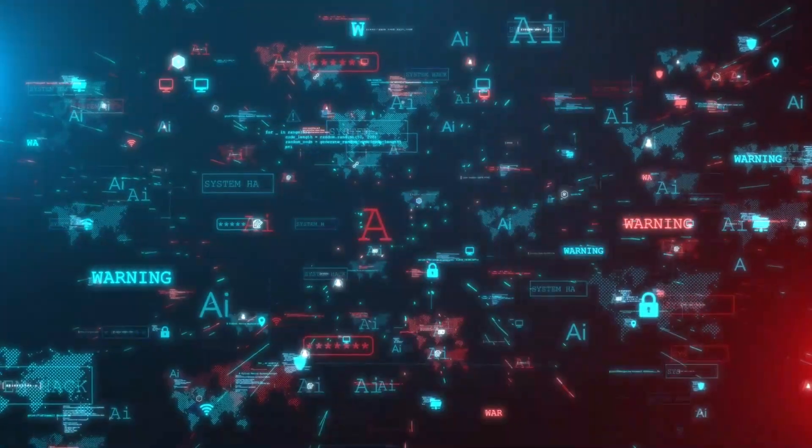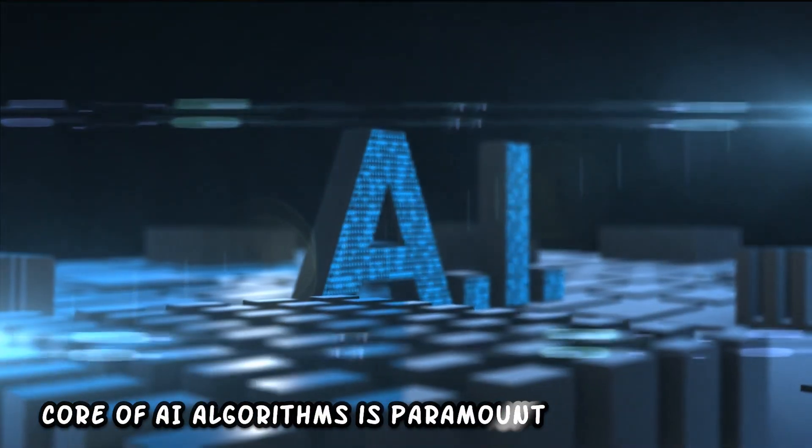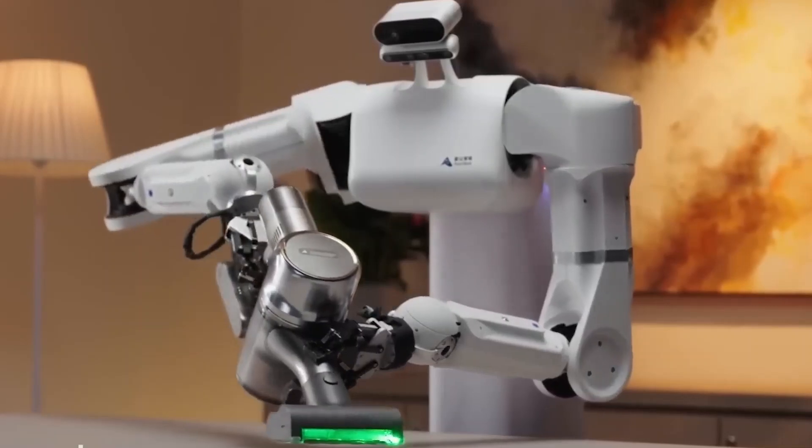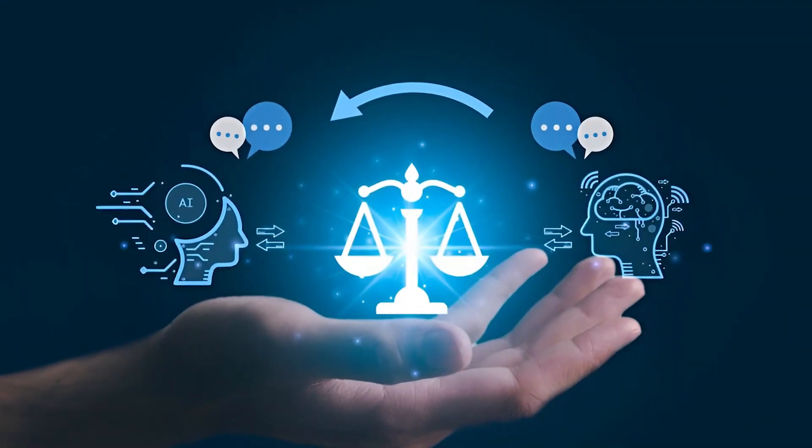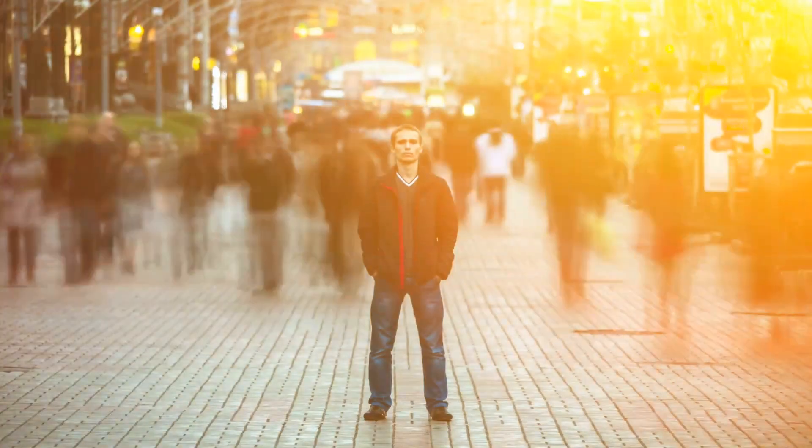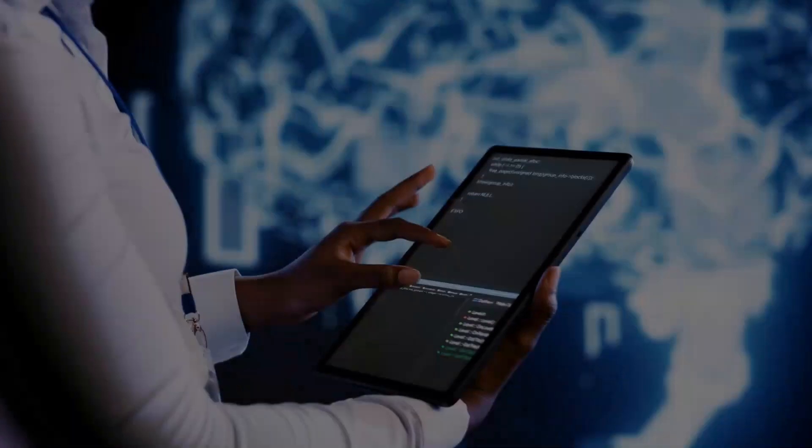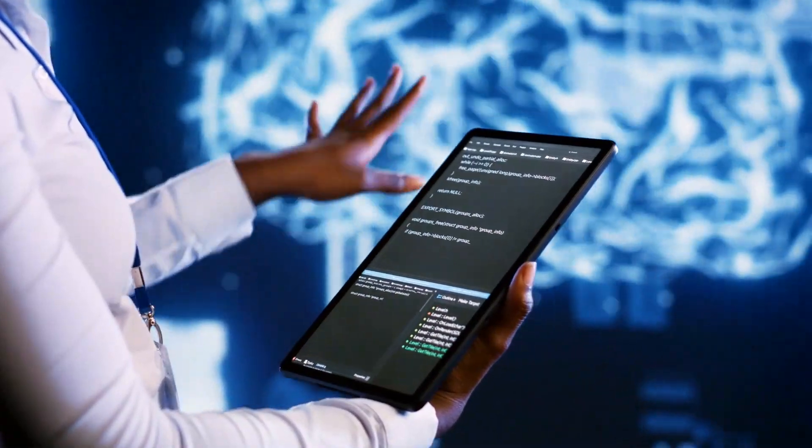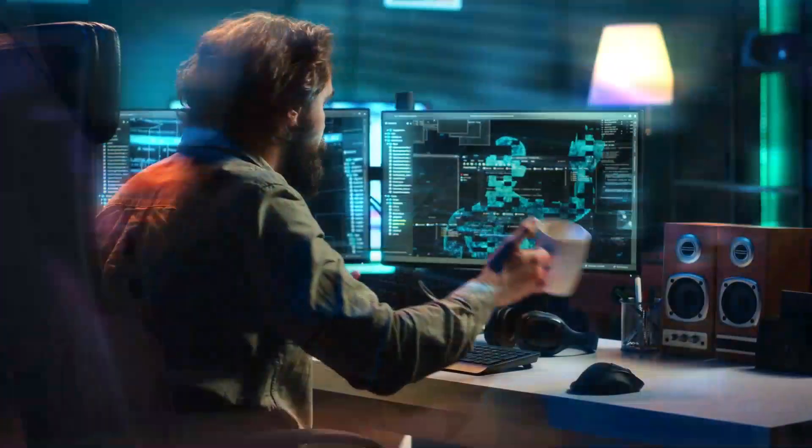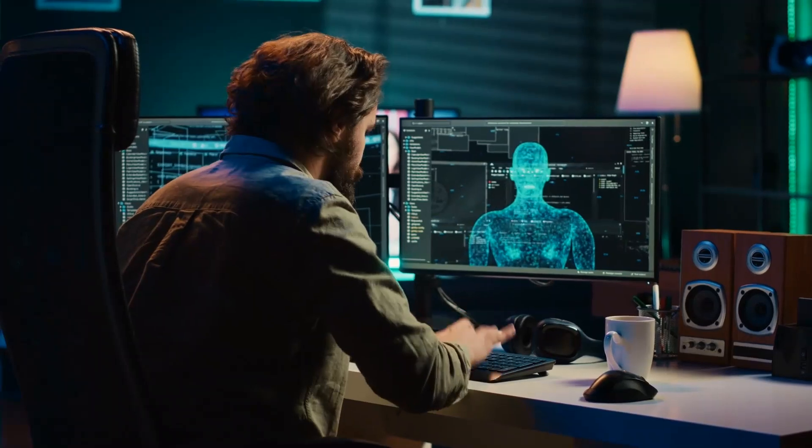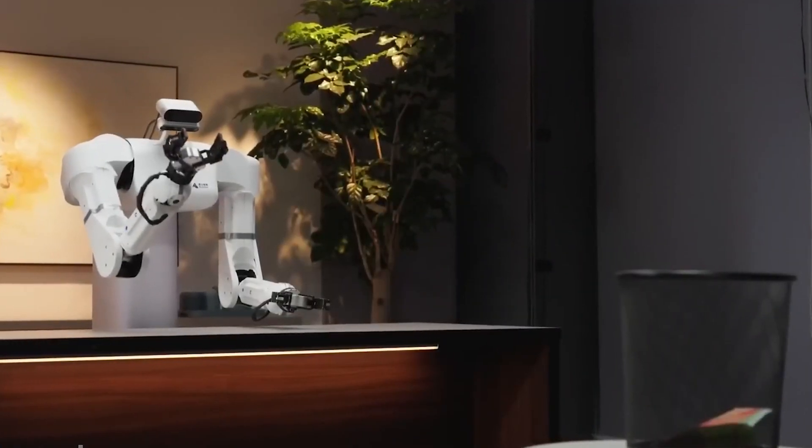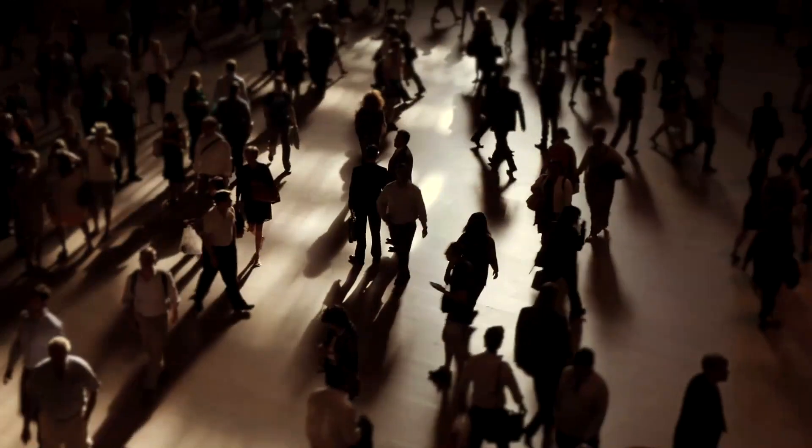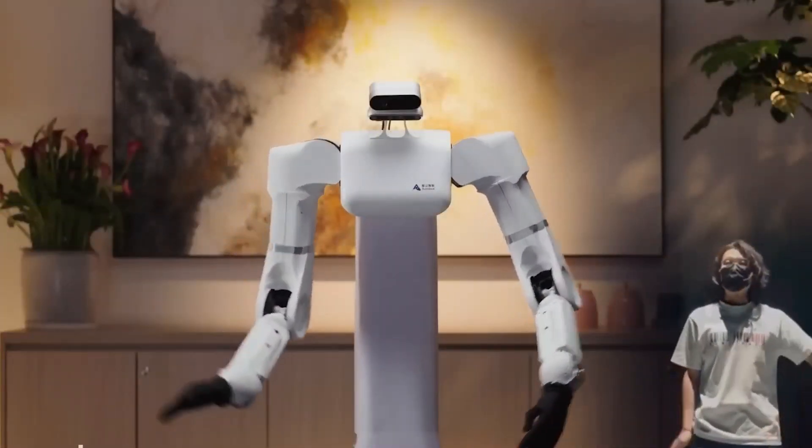Additionally, embedding ethical considerations into the core of AI algorithms is paramount. Astrobot must not only prioritize task efficiency, but also adhere to ethical principles that safeguard human dignity and rights. This entails designing AI systems with built-in mechanisms for ethical reasoning, empathy, and value alignment, enabling Astrobot to navigate moral dilemmas and prioritize human welfare in its decision-making processes.